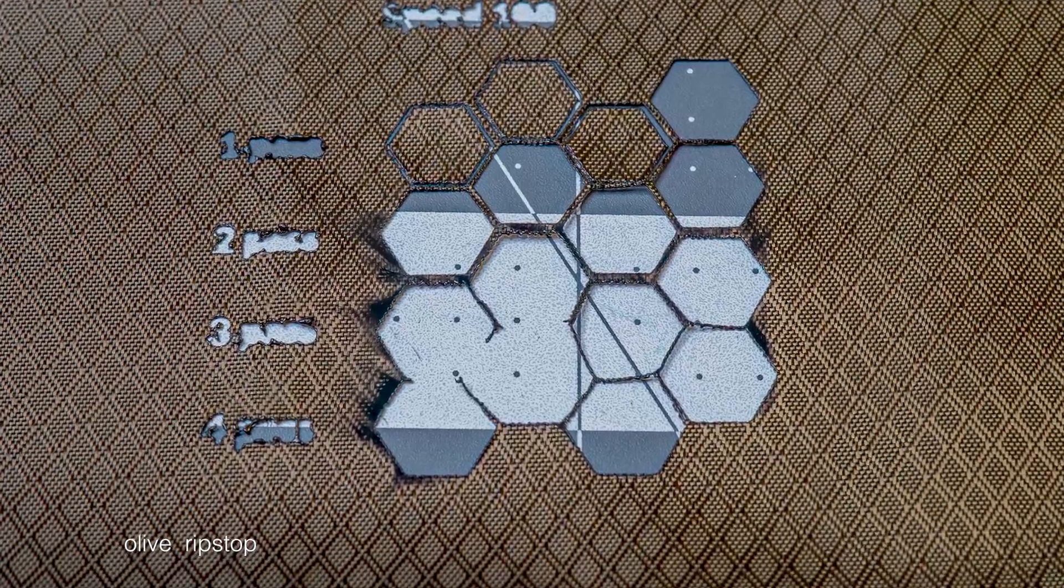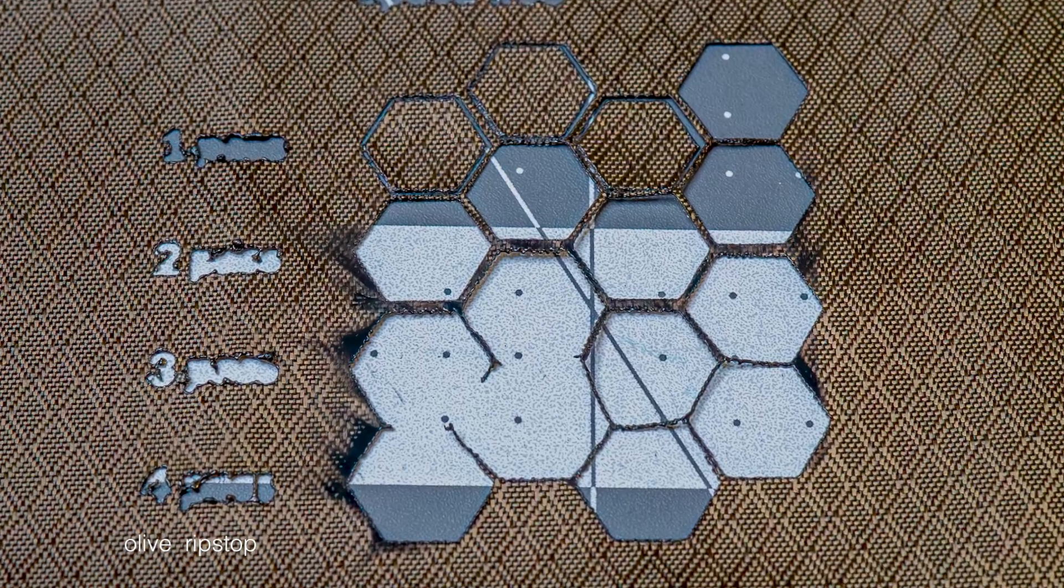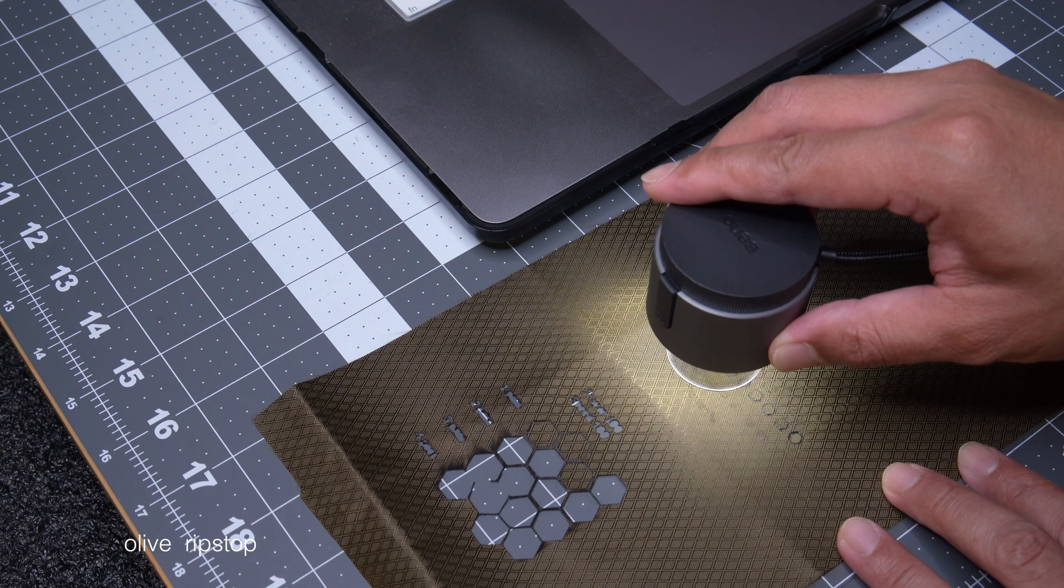After multiple passes at full power, it's clear that the blue diode laser was also melting the ripstop outward. The more passes, the more the material between the cuts would wither away.